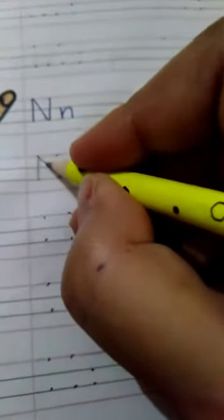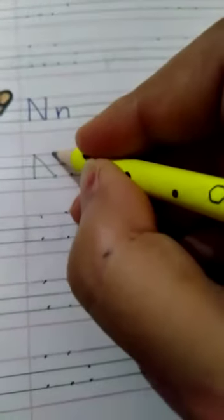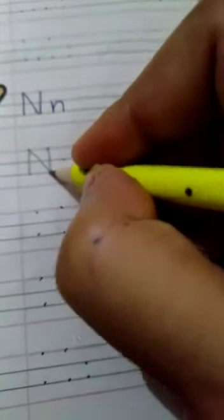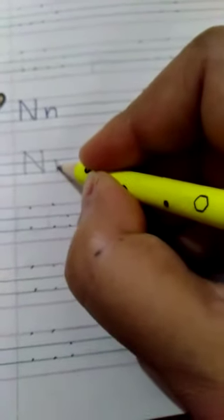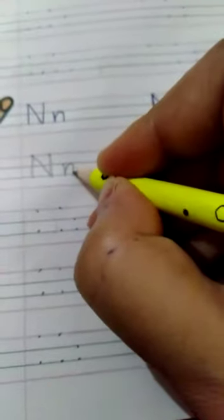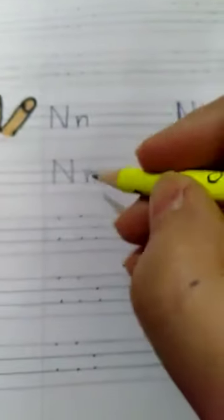Standing line, one slanting line, and standing line. This is N and n. Small standing line from the middle and small curve reaching the bottom. N.